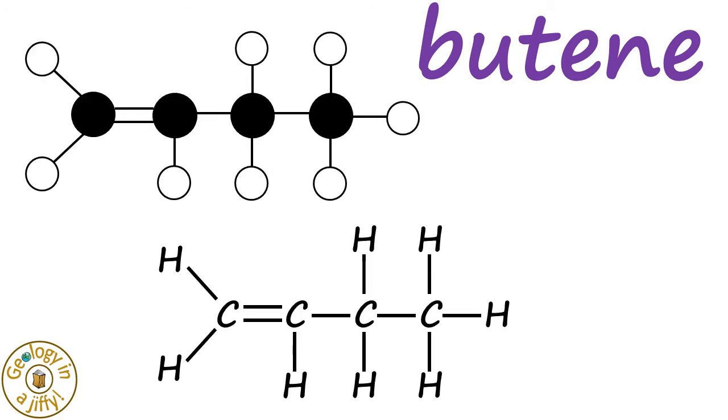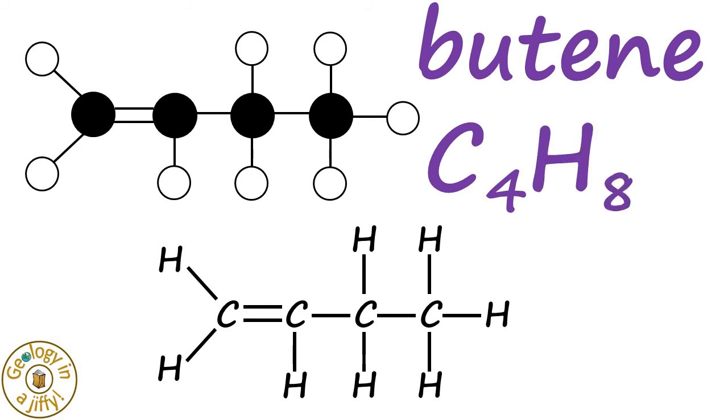Butene is the next alkene, with its backbone of four carbon atoms, having the formula C4H8.